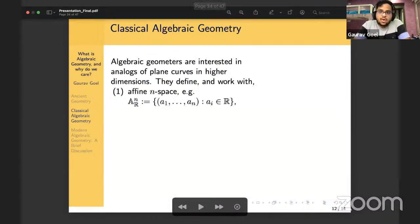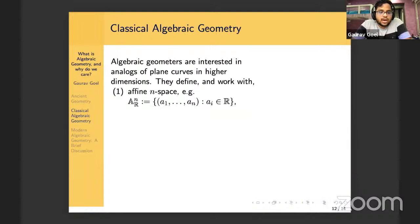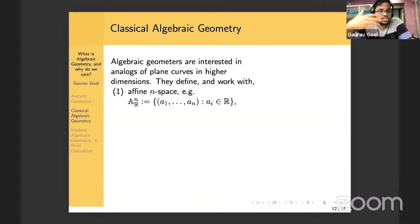Now I want to give you a brief idea about classical algebraic geometry. All of this was classical algebraic geometry — but there's so much more to it than Bézout's theorem. Algebraic geometers are interested in analogues of plane curves in higher dimensions. For that, they define and work with affine n-space, which is just n-tuples of real numbers — basically the same thing as the vector space ℝⁿ, except you don't have a distinguished origin. You can think of affine 1-space as the line, affine 2-space as the plane, and affine 3-space as 3D space.